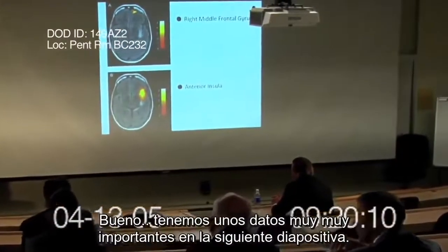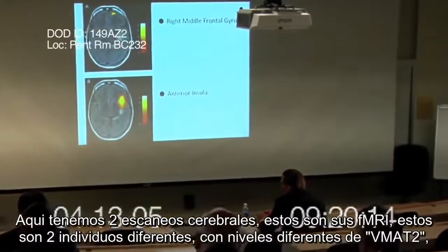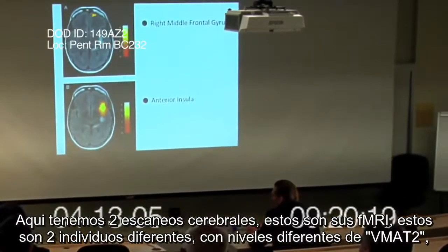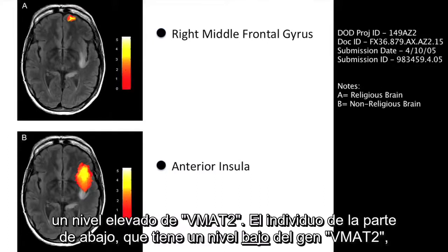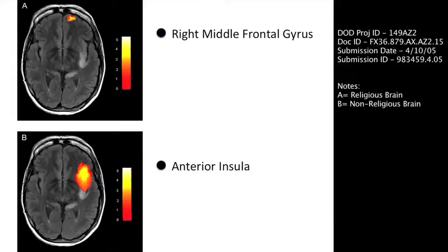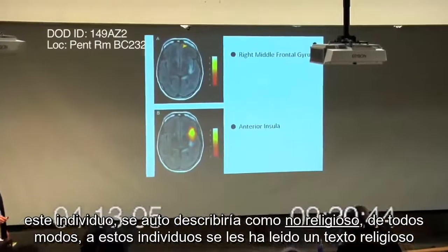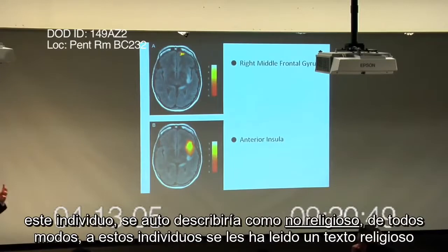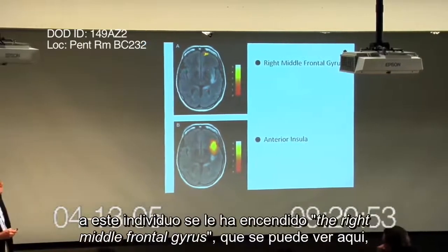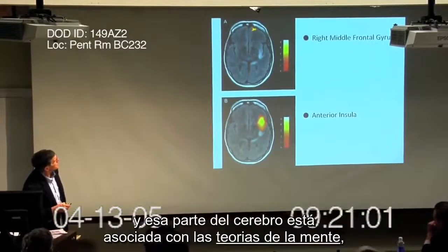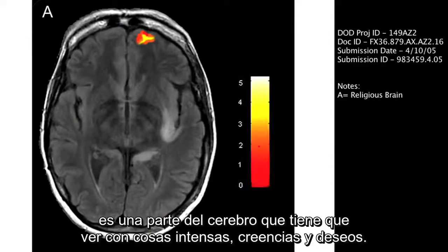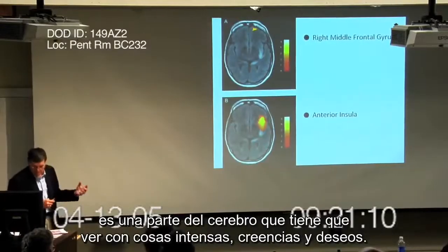So we have some very remarkable data in this next slide. Here we have two brain scans. These are fMRIs — two different individuals with different levels of expression of VMAT2. On top is an individual who's a religious fanatic, and we've repeated this numerous times, that has high levels of VMAT2. This individual down here had low levels of the VMAT2 gene and would self-describe as not particularly religious. In each case, these individuals were read a religious text. This individual lit up the right middle frontal gyrus, which is a part of the brain associated with theory of mind.